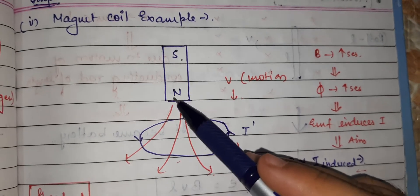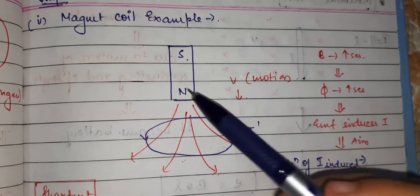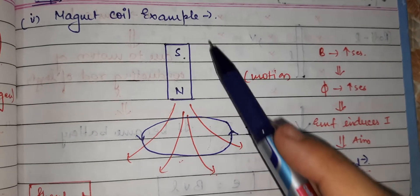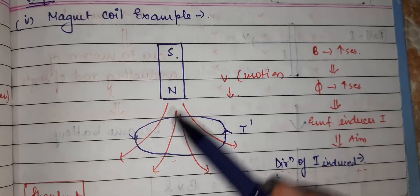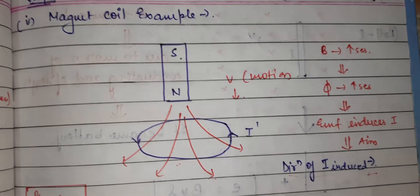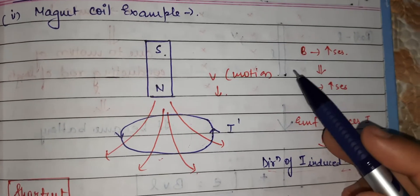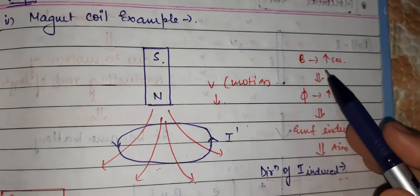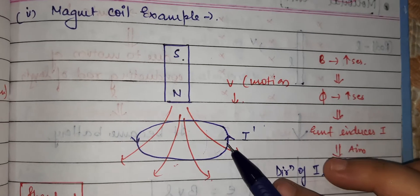Since the north pole is there, magnetic field lines come out from the north pole. If we bring the north pole closer, the magnetic field lines from the north pole will cross and enter the loop. As the bar magnet comes closer to the loop, slowly the number of magnetic field lines passing through the loop will increase.